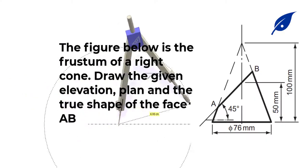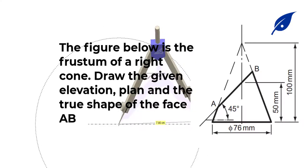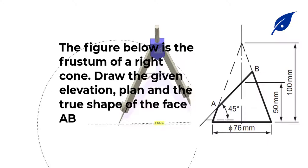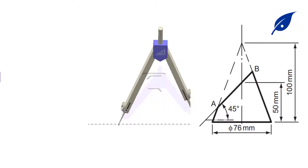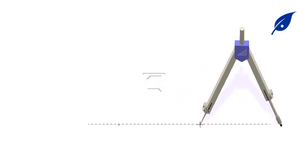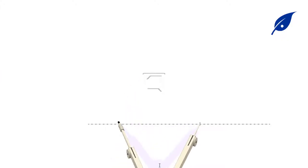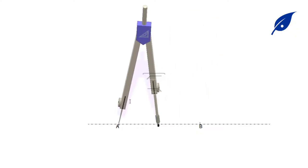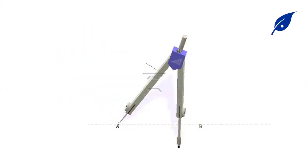We start by drawing a horizontal line, marking a point, and setting the compass radius to 76 millimeters so we can mark the points and get the diameter of the base of the cone, which is 76 millimeters, giving us points A and B.